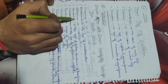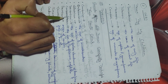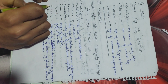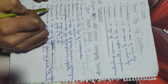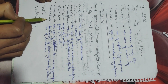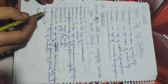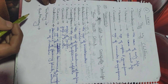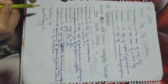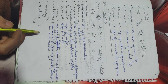The words of this sentence stand for: Cambrian, Ordovician, Silurian, Devonian, Carboniferous, Permian, Triassic, Jurassic, and Cretaceous. There are further two more divisions of the period — Tertiary and Quaternary — which we can learn easily.